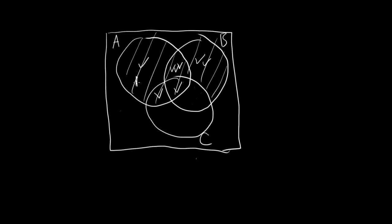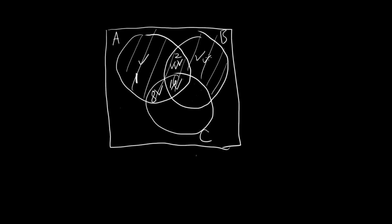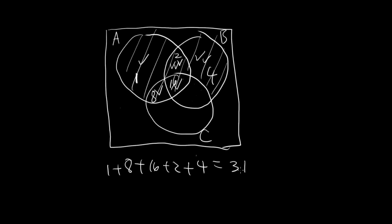And here we have 1, 2, 8, 16, and 4. So we're going to just add them up. So 1 plus 8 plus 16 plus 2 plus 4, which comes out to 24, 26, 30, and 31. So your final answer is 31.